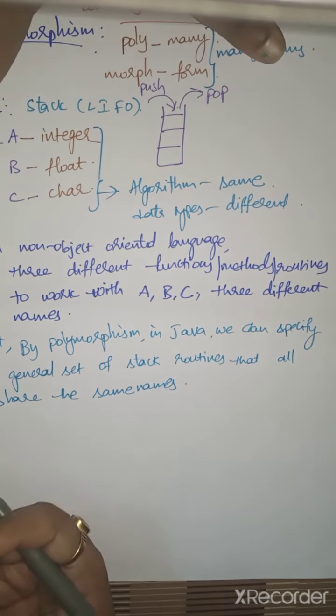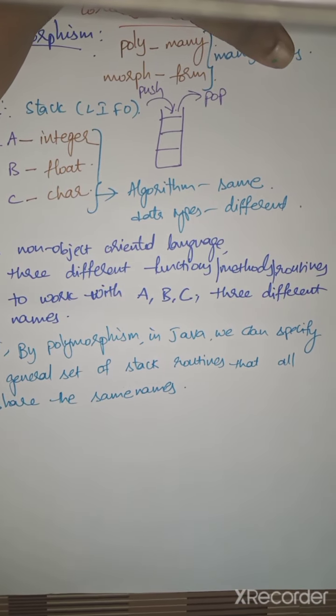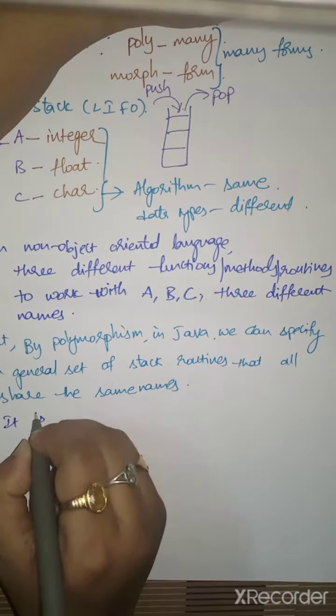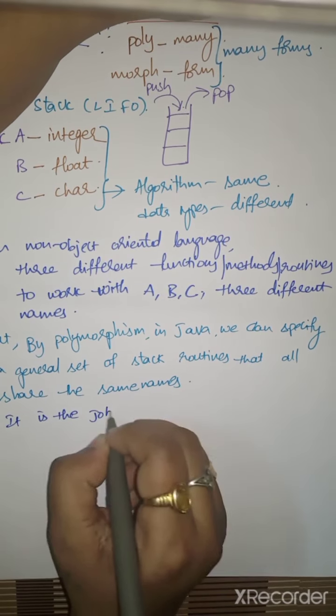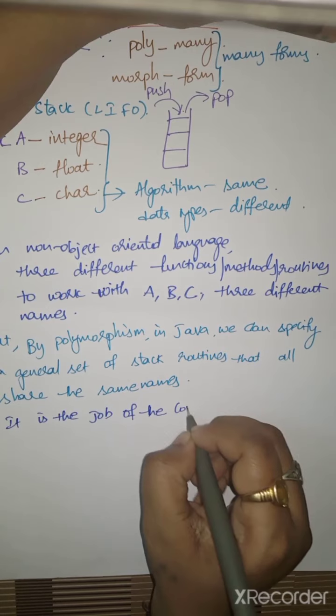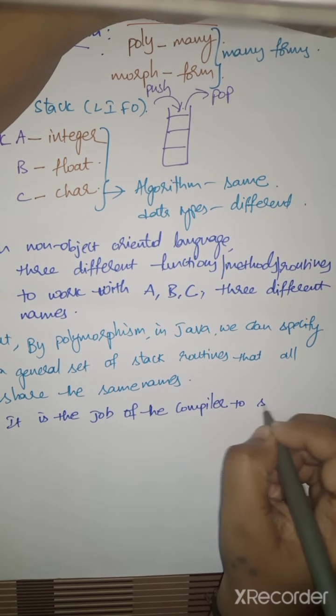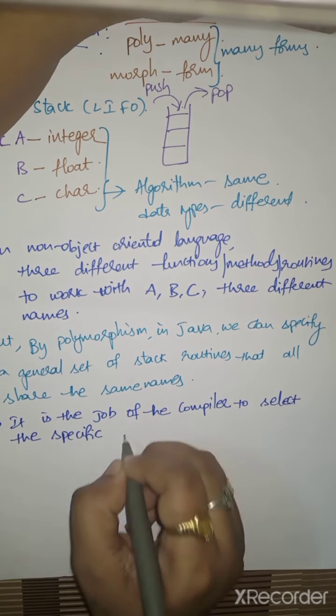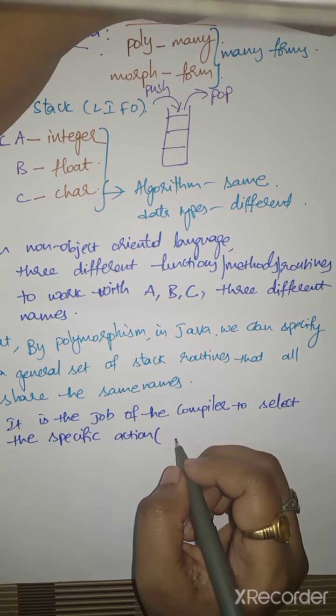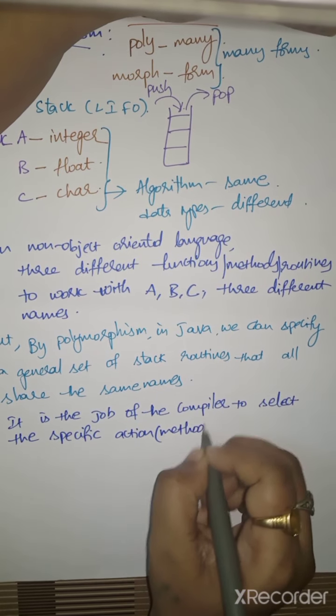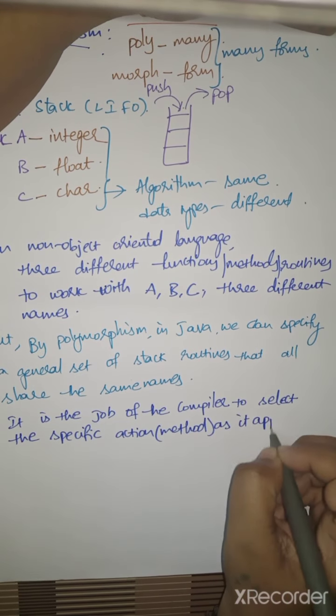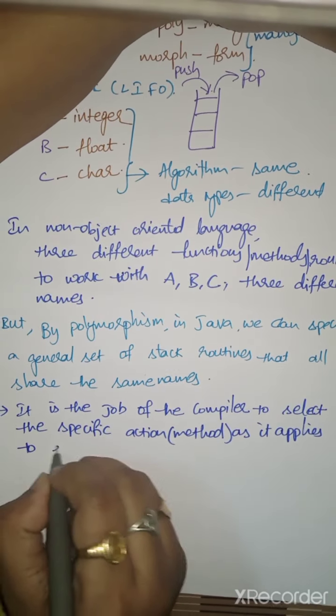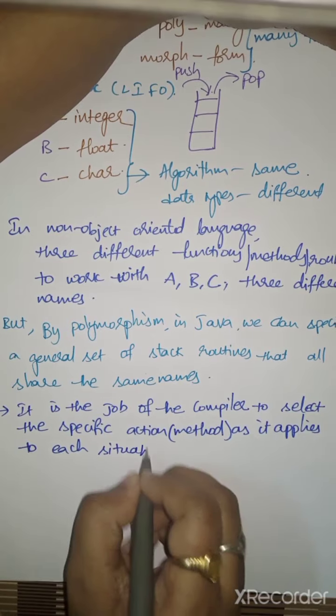If all three have the same name, how can we decide which one to use for integer, float, or character? That is the job of the compiler - to select the specific action. What do I mean by specific action? The specific action method as it applies to each situation.